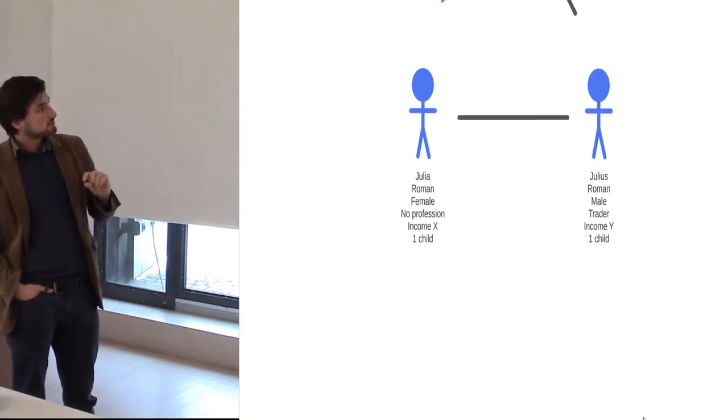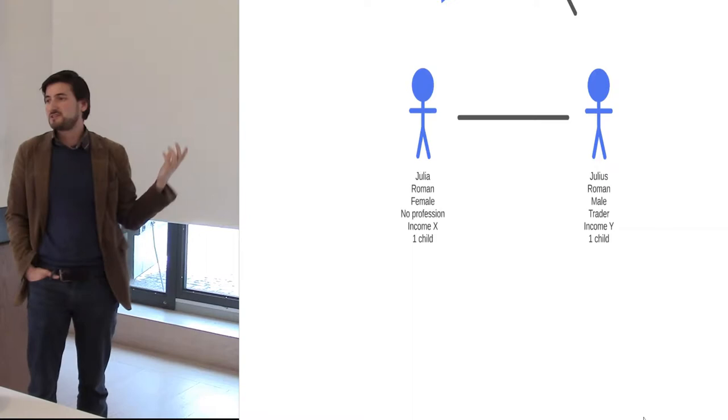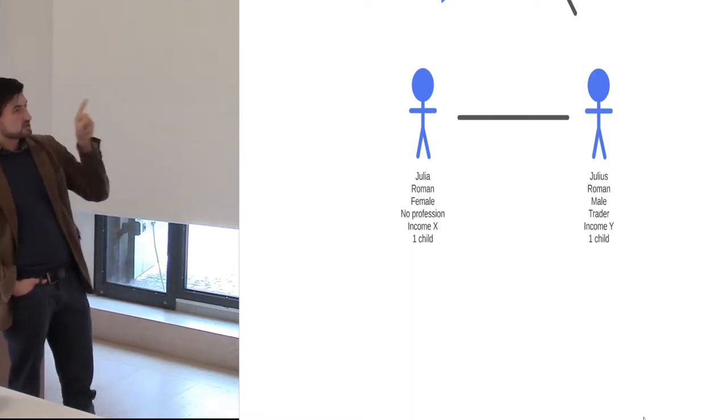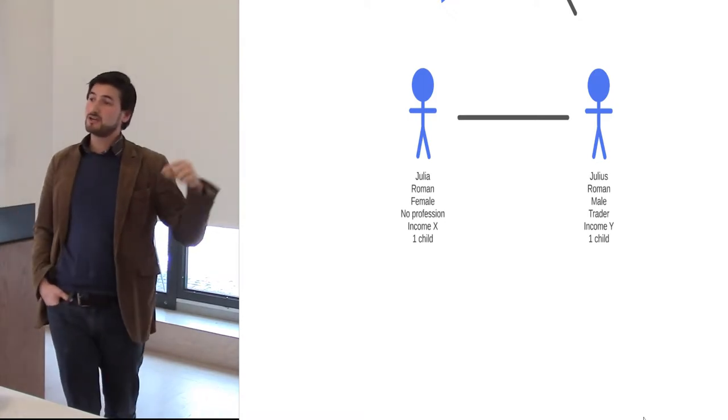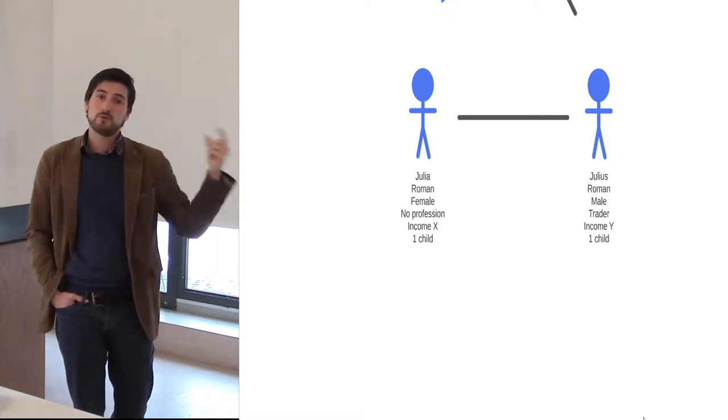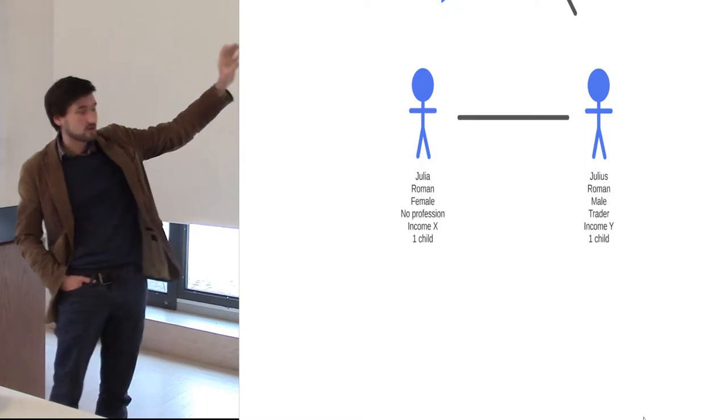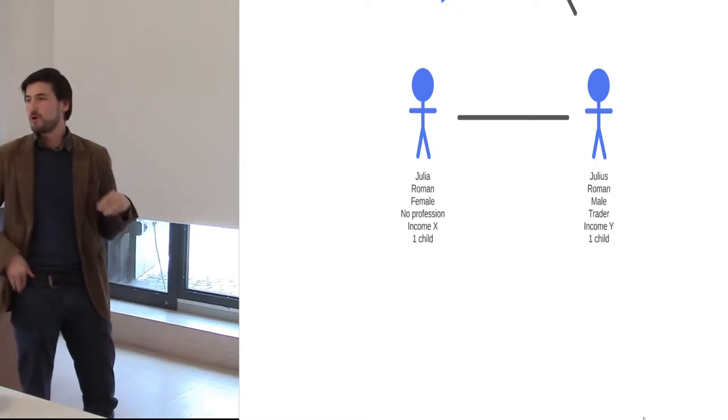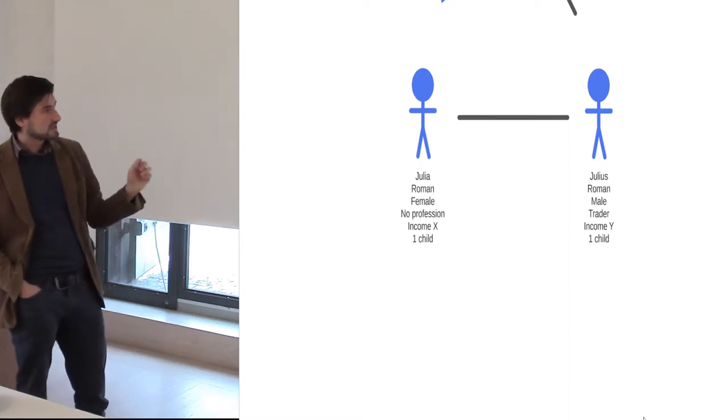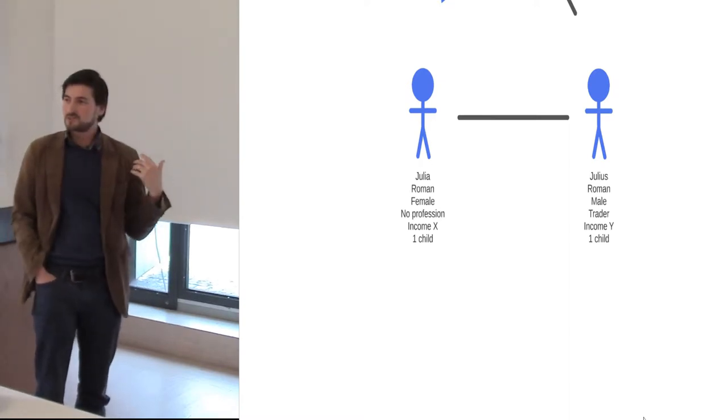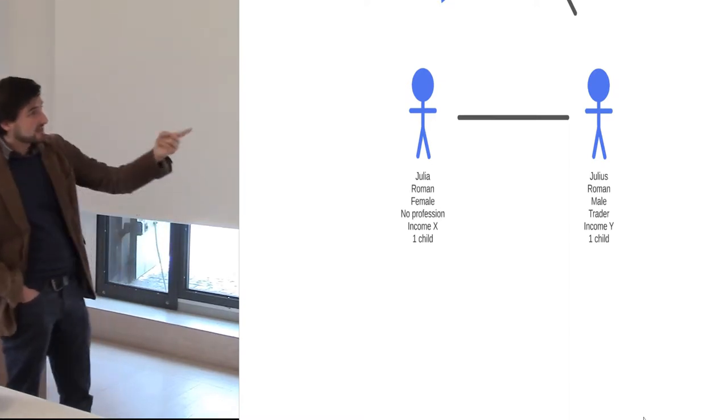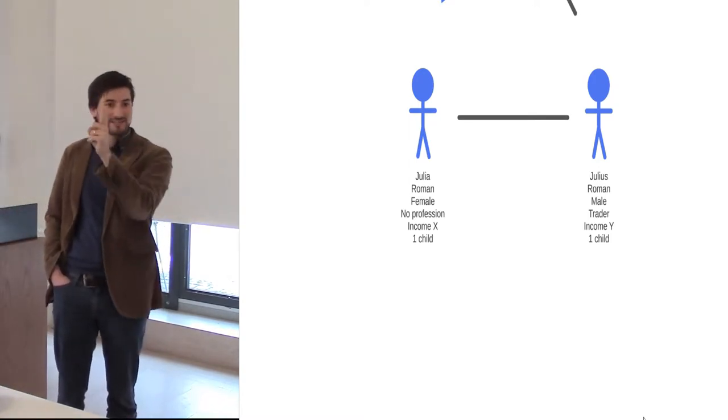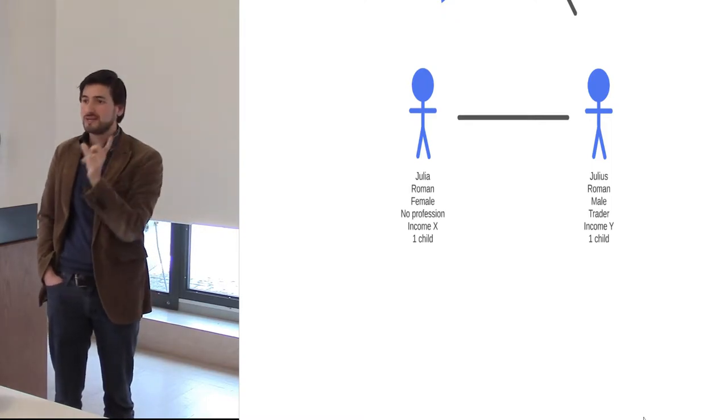We also draw a line between Julius and Julia. Let's assume this is a romantic relationship. The last piece of information, the one child, that's a piece of attribute information that cannot be explained just with reference to the information of one individual. So Julia cannot, or definitely a Roman Julia, could not just have conceived a child on their own, someone else needed to be involved. In this case it was Julius.